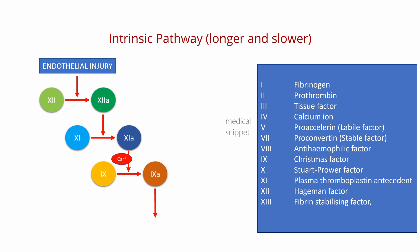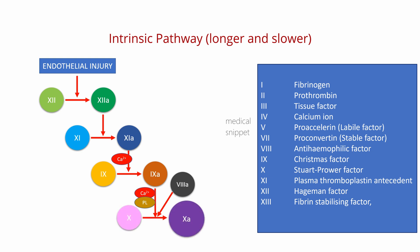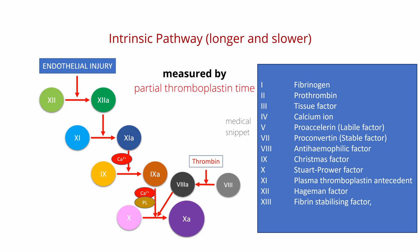The activated factor XII then activates factor XI to factor XIa. The activated factor XI, along with calcium ion, activates factor IX to factor IXa. Then factor IXa, along with factor VIIIa, phospholipid, and calcium, forms a complex. This complex in turn activates factor X to factor Xa. It should be noted that factor VIII is activated by factor IIa, that is thrombin. The intrinsic pathway is clinically measured as the partial thromboplastin time.